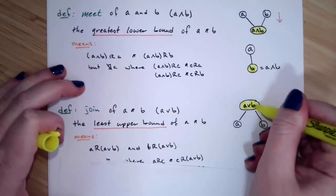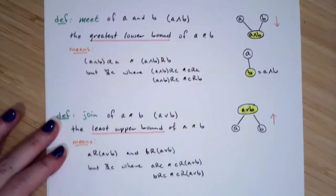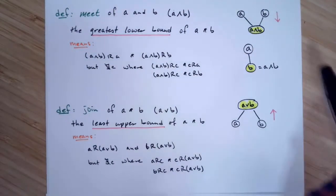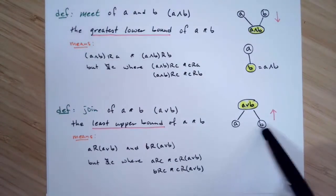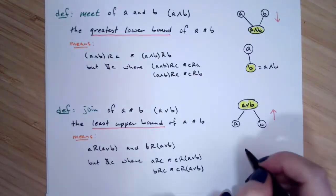Now notice, just like with our two examples with our meet, and let me pull it back down here so you can see the full meet, you could also have not just that these A and B are incomparable to each other. In other words, they don't have a line that connects them. You could actually have them where they're stacked.